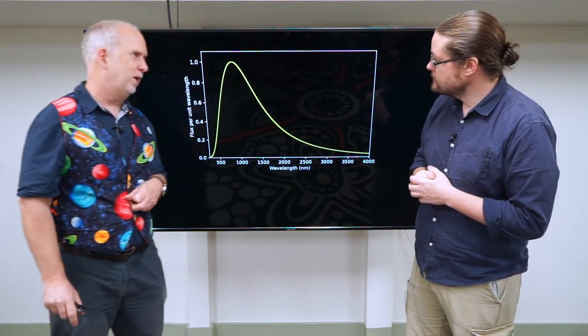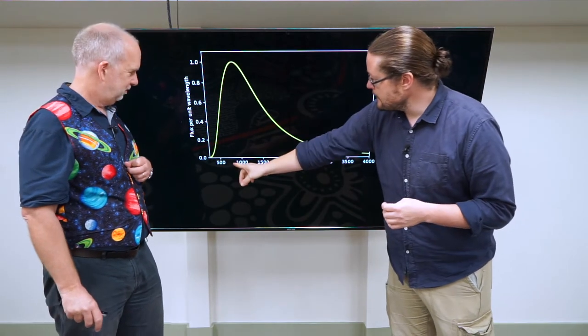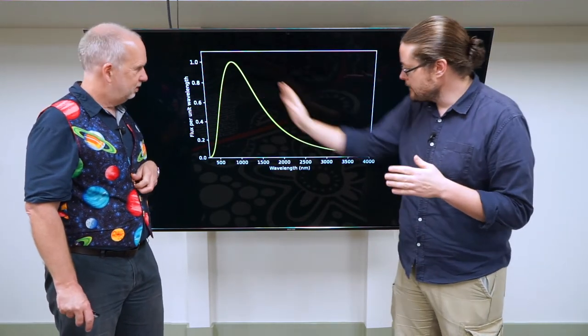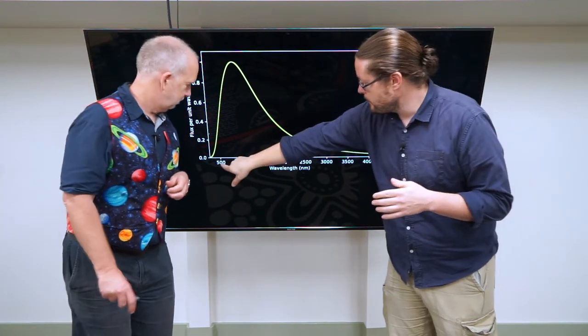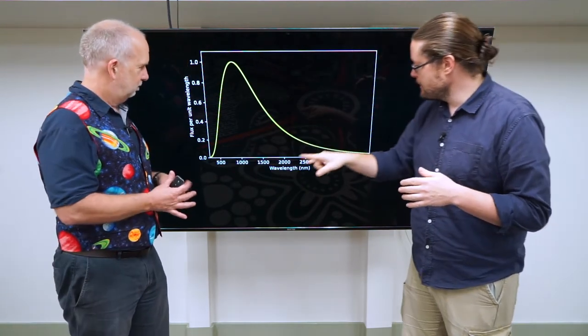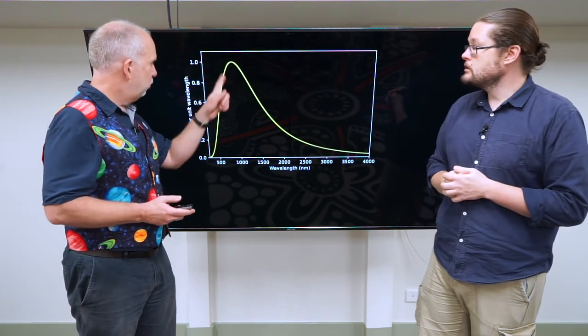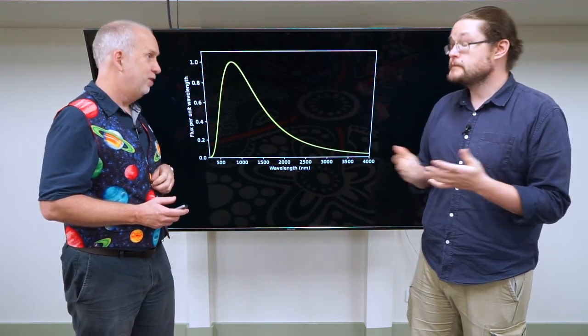It has a peak out at about 1 micrometer. The light is actually peaking further than what we can see and then keeping going down. If we take the part that we can see, it's actually a small amount of the total output of that light. Most of the output is actually out in the infrared from this particular thing.